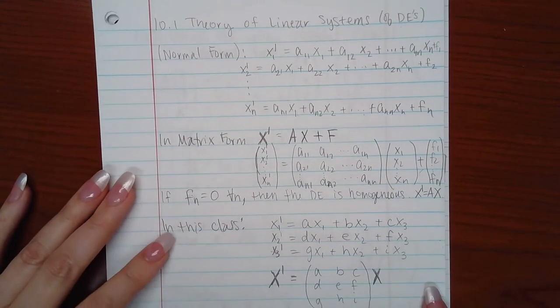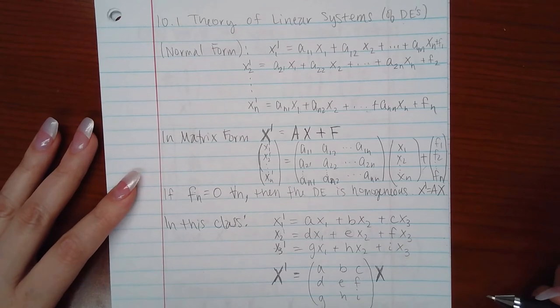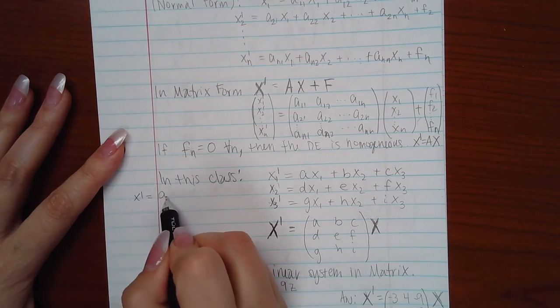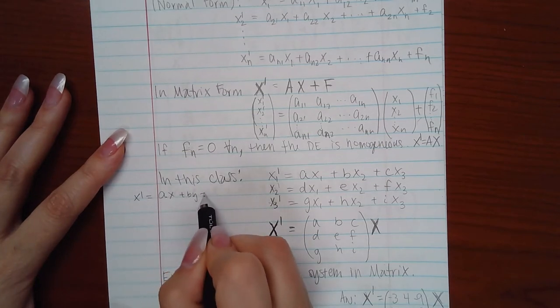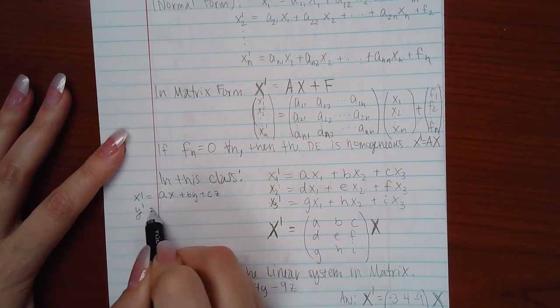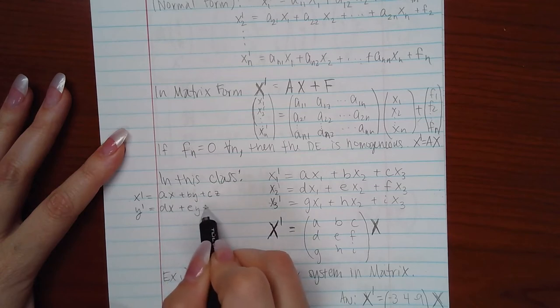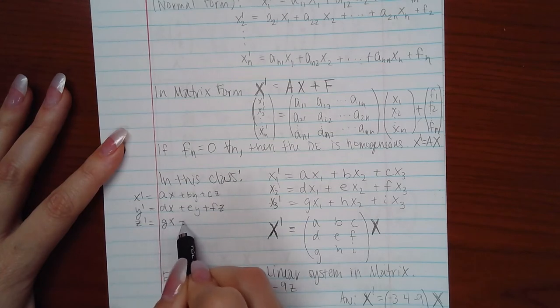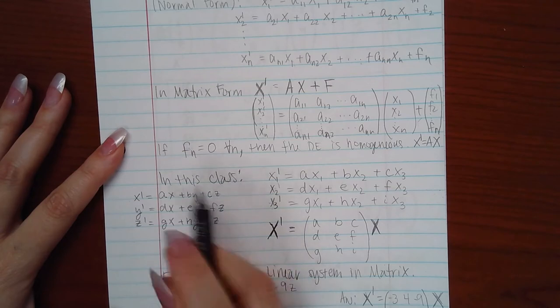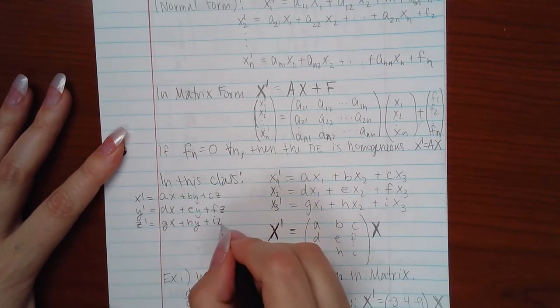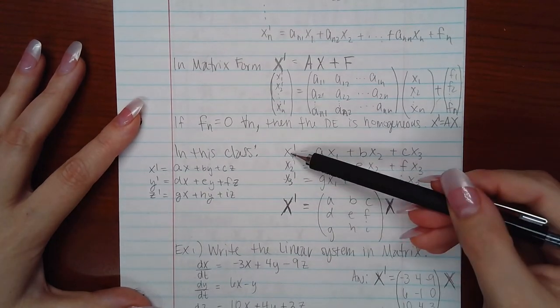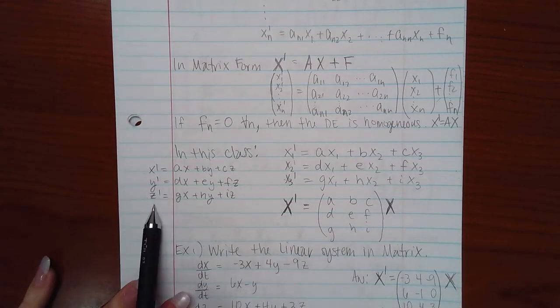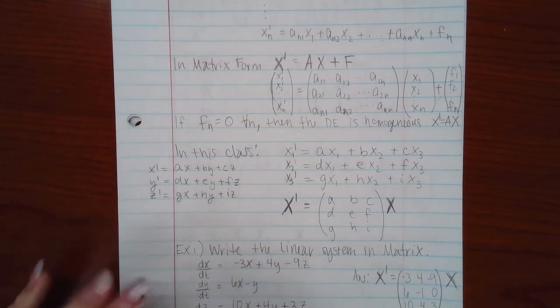Okay, and so in this class we're only going to be doing two by two and three by three. So what you can do is if you have a three by three, X prime equals AX plus BY plus CZ, and then Y prime equals DX plus EY plus FZ, and then Z prime equals GX plus HY plus IZ. So you still have whatever your variables are here, they should be the same variables here, except on the left-hand side it's the primes.